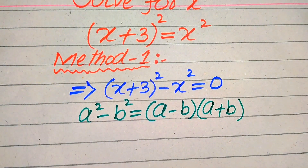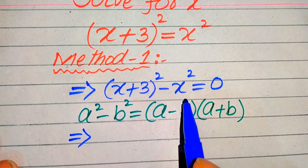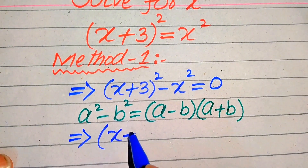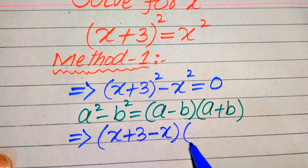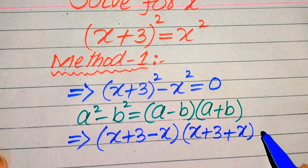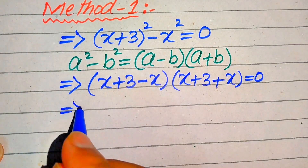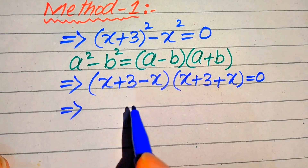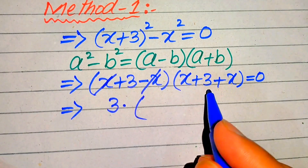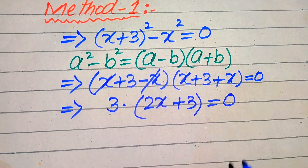According to this formula, we write our equation in this form. The base of the first term is a and the base of the second term is b, so a is (x + 3) and b is x. In the first factor we have a minus b, which is (x + 3) minus x, and a plus b, which is (x + 3) plus x, all equals 0. Simplifying: the x and negative x cancel, leaving 3, and x plus x gives 2x + 3, so we have 3(2x + 3) = 0.